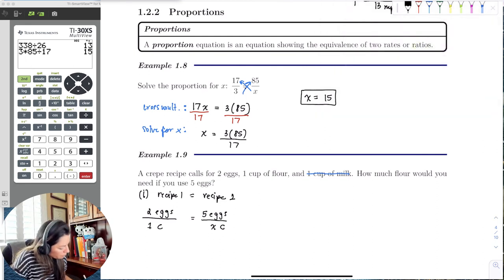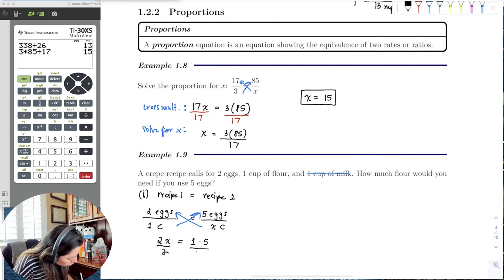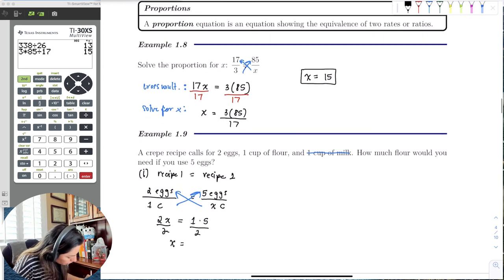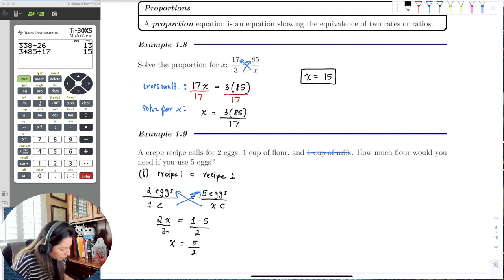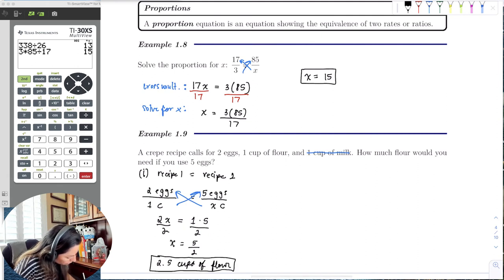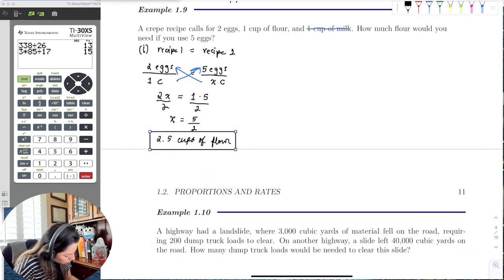So here I'm going to cross multiply. So I get two times x equal to one times five. So then if I divide each side by two, I get x equals five halves. But we really don't say that in recipes. We don't say five halves cups of flour. So we say two and a half cups. So we would say we need two and a half cups of flour. And see, these can be really simple, especially if we go and use it in the calculator.